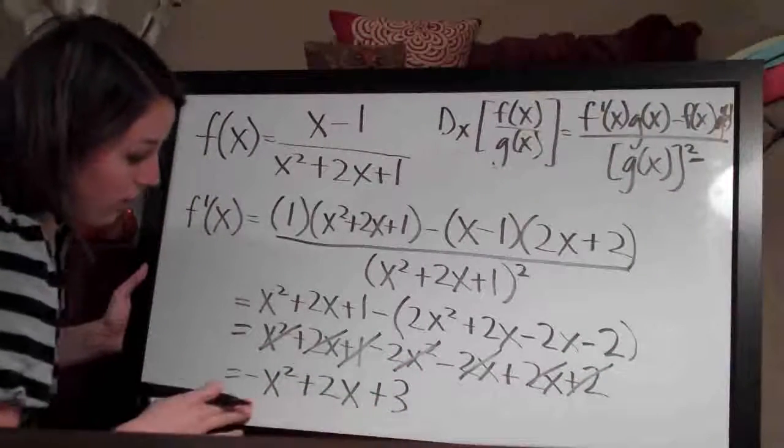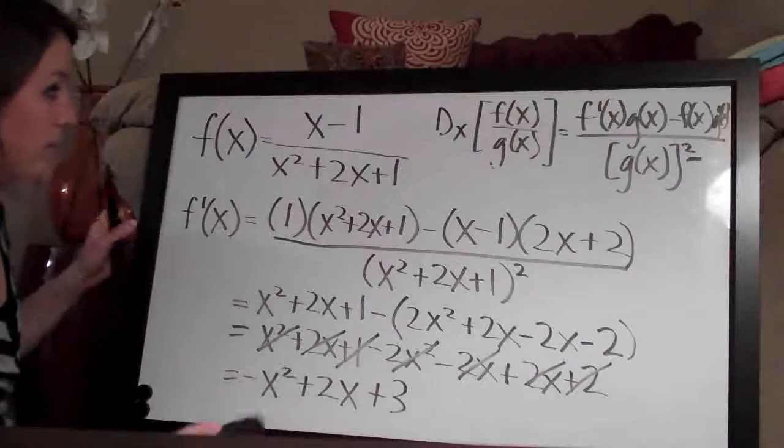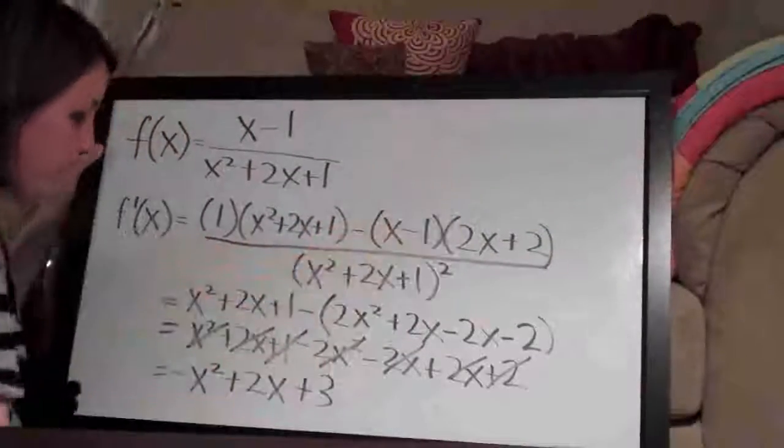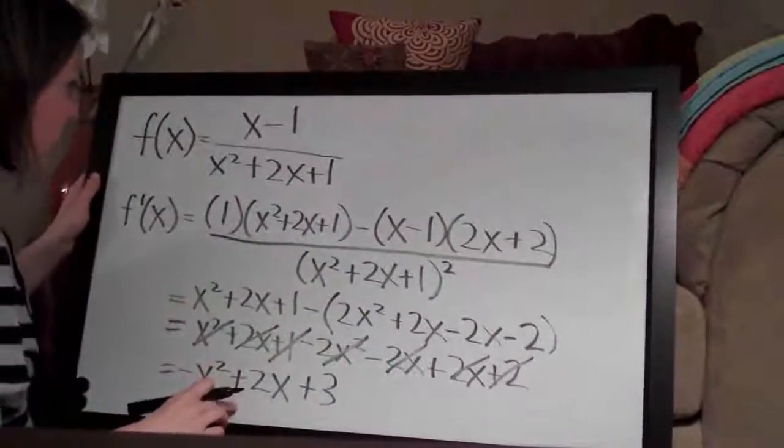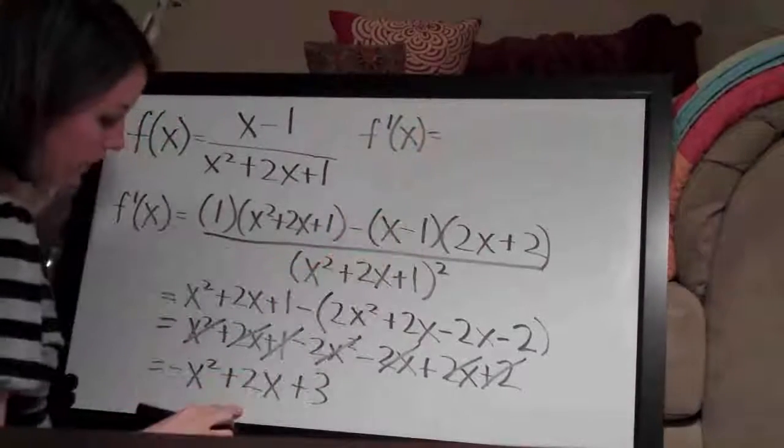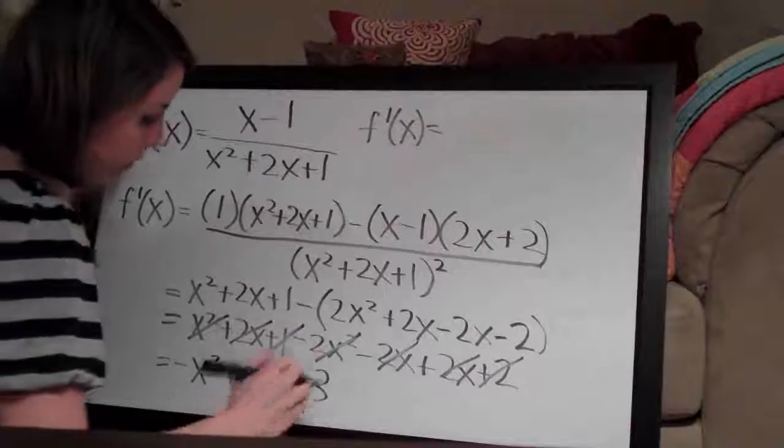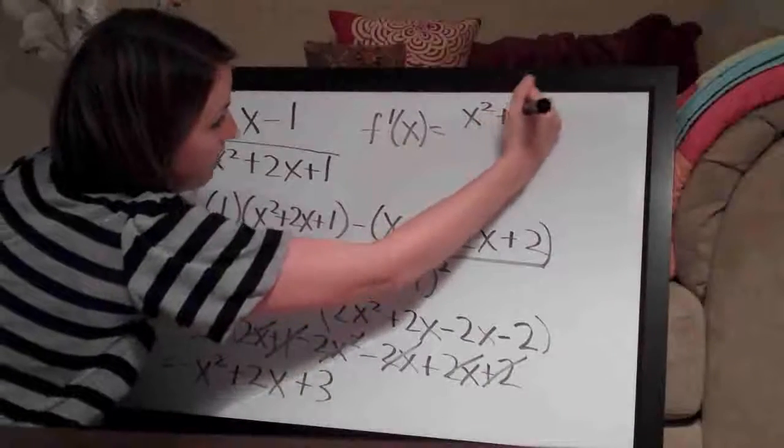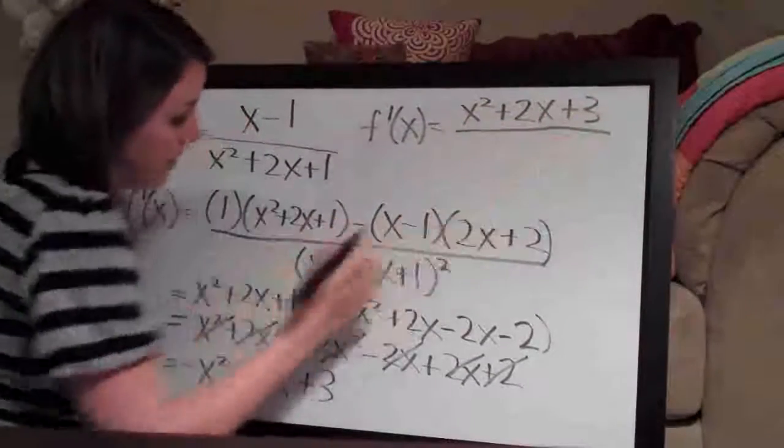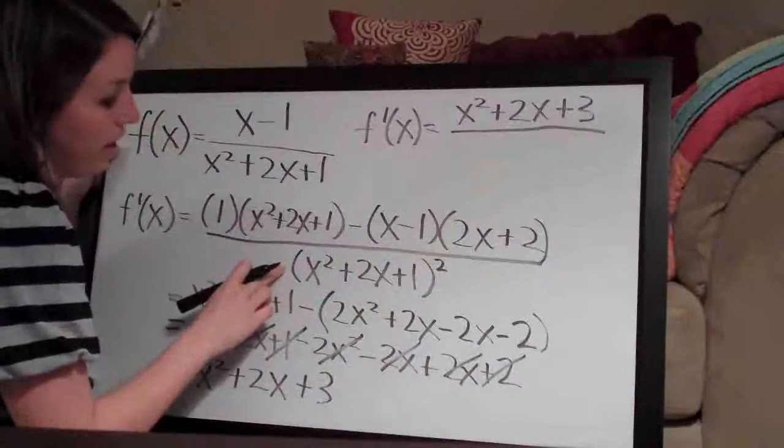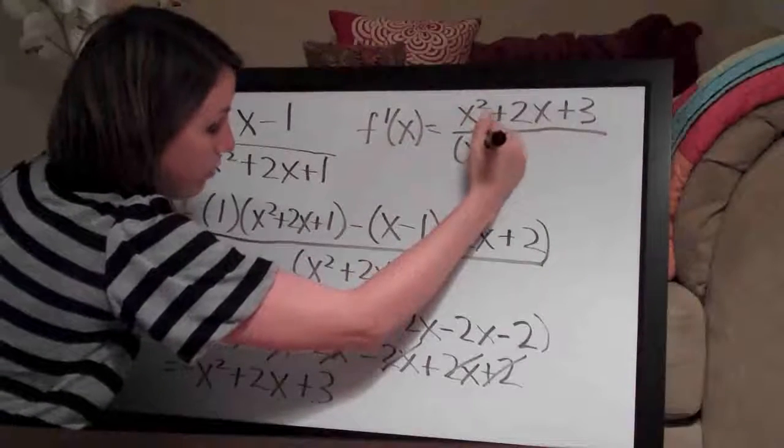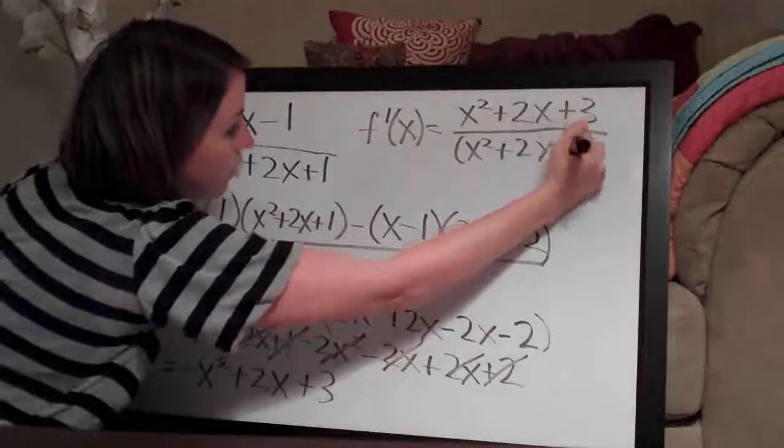Remember, this was just us simplifying the top. I'm going to get us some more room by erasing. Our answer is f'(x) equals -x²+2x+3 over (x²+2x+1)².